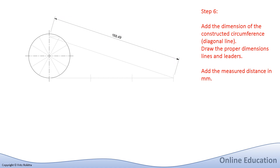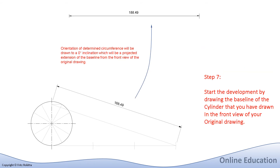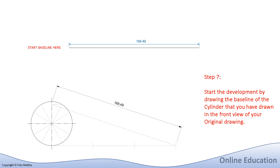Now we have the result of the constructions done on paper. Here I am doing an illustration to show that the circumference we have now constructed will be placed in line with the base of our cylinder on the front view, and we project that distance out and then measure off the length of the circumference on the projected baseline construction from our cylinder in the front view. Here is the start of where we will draw our baseline, which we now want to divide into 12 equal segments to do the development of the cylinder.